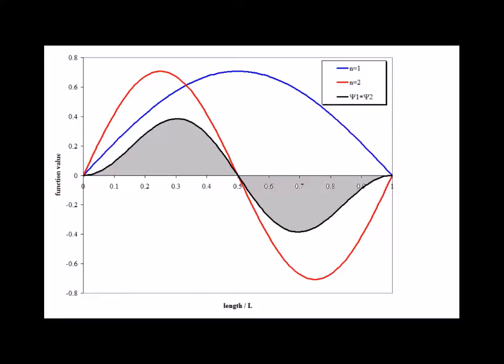In the first case, we look at the n equals 1 and n equals 2 solutions. The black line shows the product psi 2 star psi 1, and with gray we've shaded the area under the curves. Areas above the x-axis are considered positive, and those below the x-axis are considered negative.